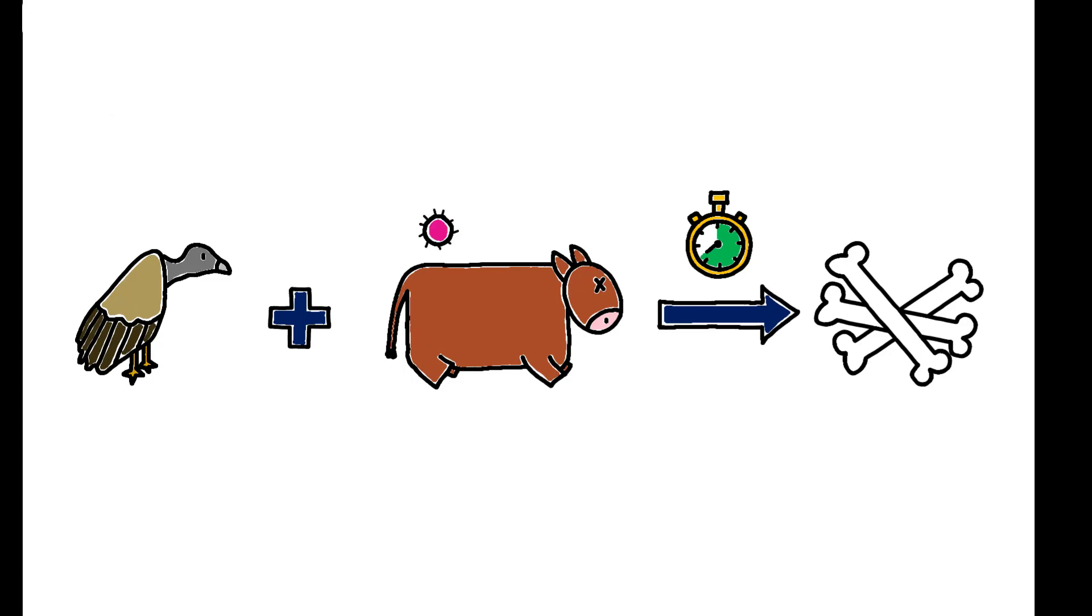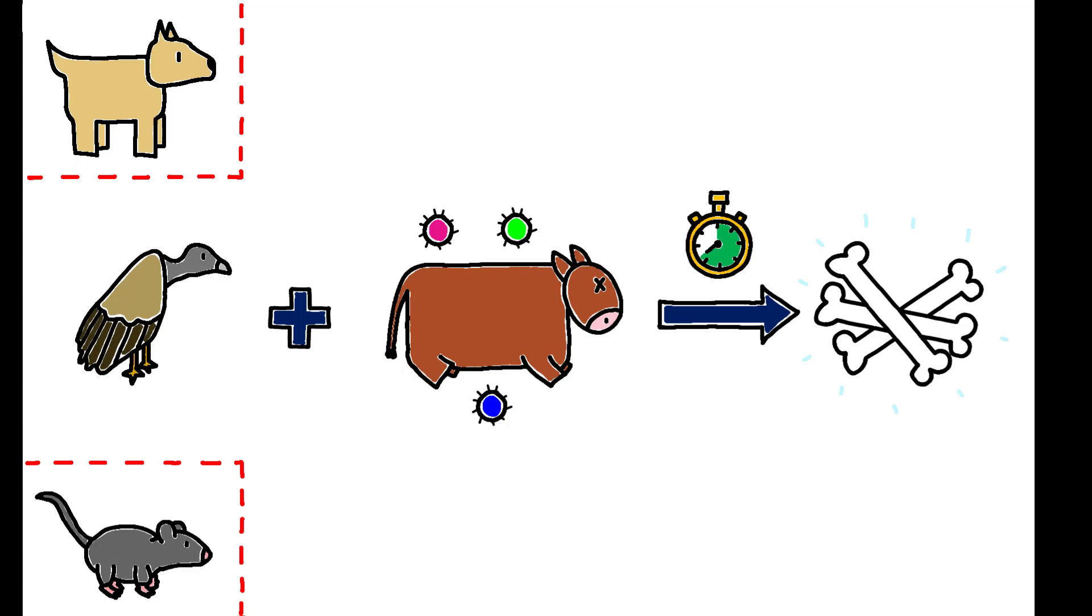Vultures reduce pathogen and bacteria concentrations in the environment because, unlike other scavenging species, they do not leave any flesh behind, and they crowd out competitors such as rats and dogs that transmit diseases such as rabies.